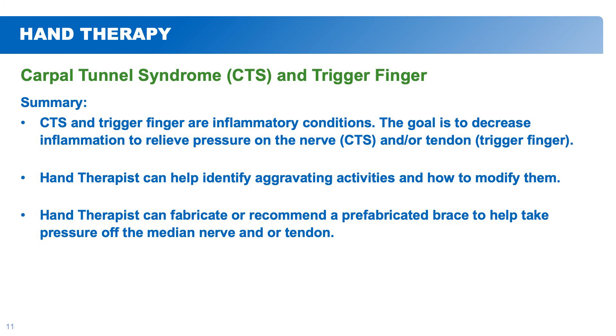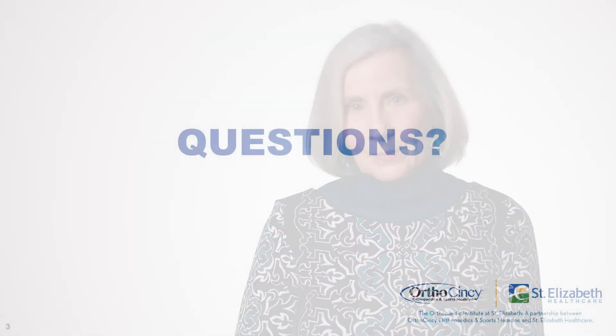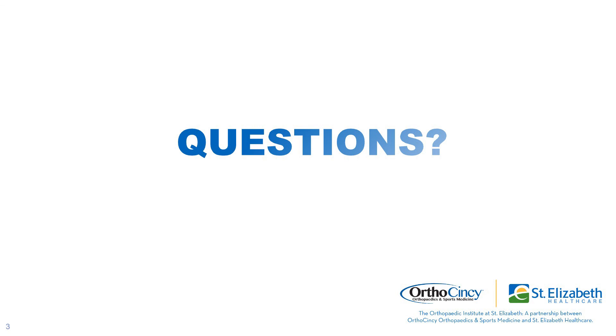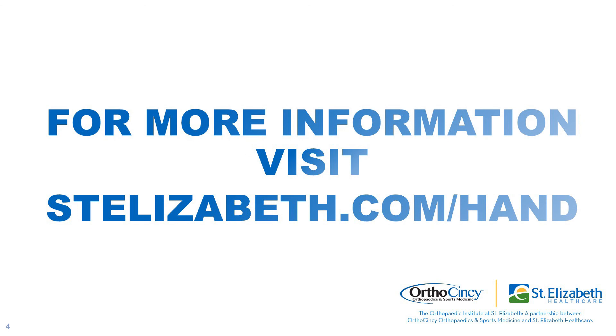In summary, carpal tunnel and trigger finger are both inflammatory conditions. In therapy we try to reduce inflammation and relieve pressure on the nerve for carpal tunnel and pressure on the tendon for trigger finger. Hand therapy can help identify activities that aggravate your symptoms and how to calm them down. We can fabricate or recommend splints to take pressure off the nerve. If conservative treatment does not help, we recommend seeing a hand surgeon. If surgery is suggested, we see you afterward to address wound and scar care, stretching, splinting, strengthening, and returning you to full function. Thank you for watching. If you have questions, feel free to call us at St. Elizabeth Hand Therapy.